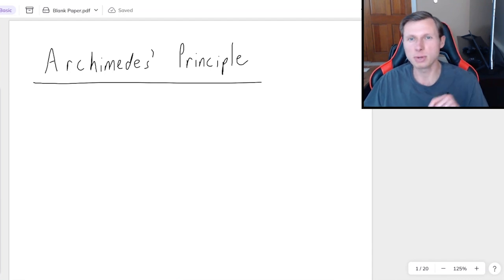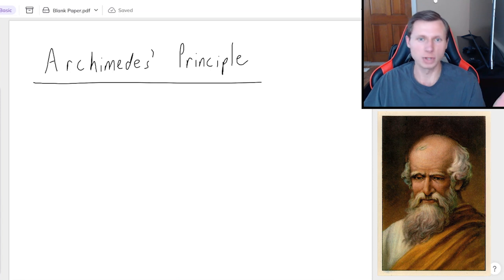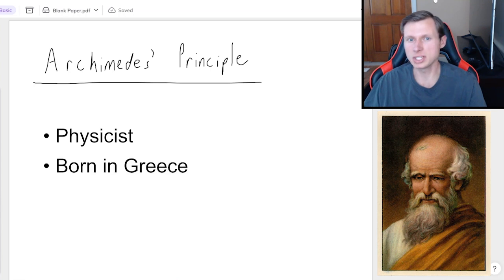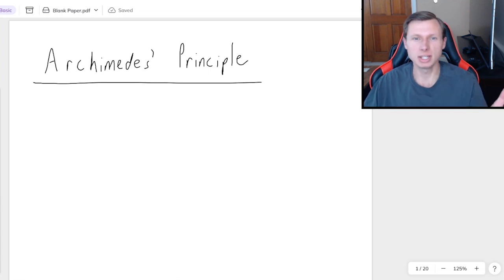So first a very brief history of Archimedes because you need to know it. It's a crime if you go through all of physics and not know who Archimedes is. So Archimedes was a physicist born in Greece. He came up with Archimedes principle and he was very smart. So that's everything you need to know about Archimedes. Now let's talk about his principle.